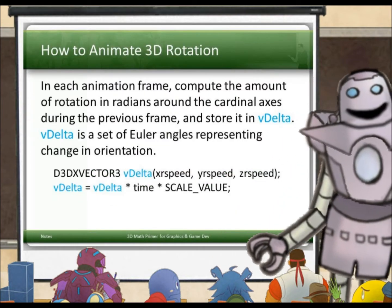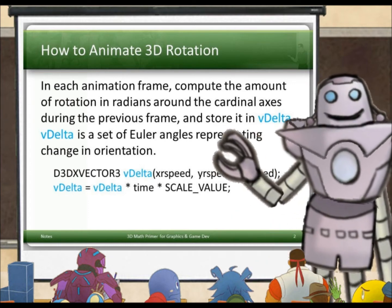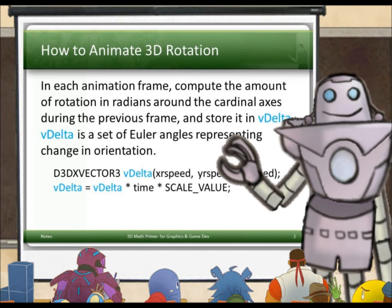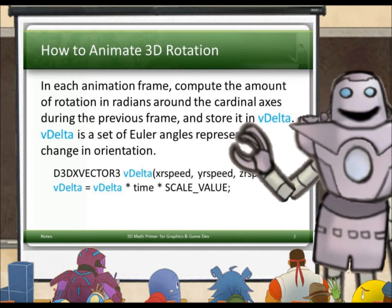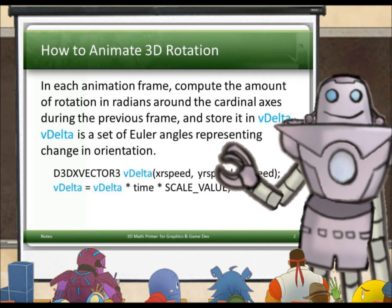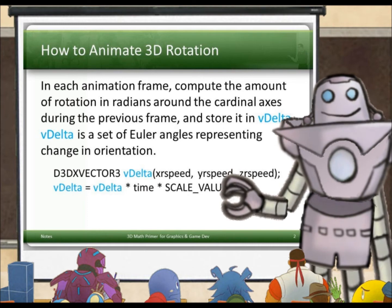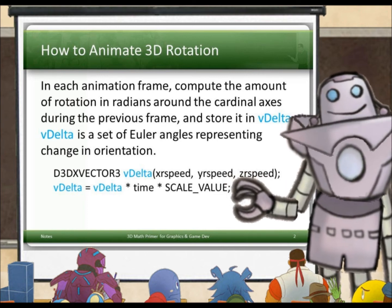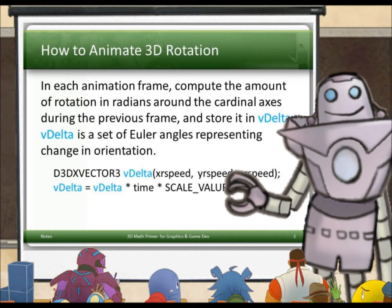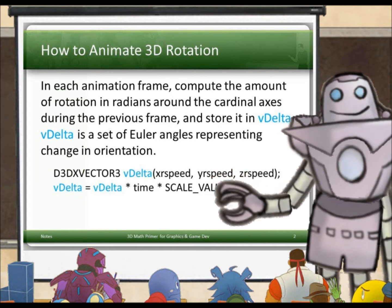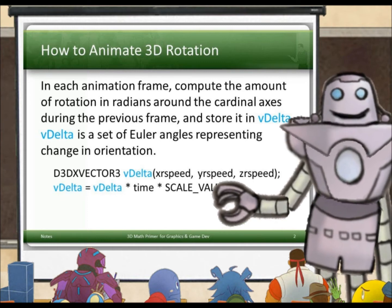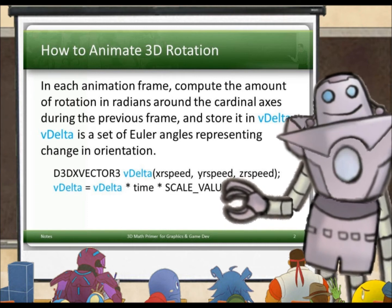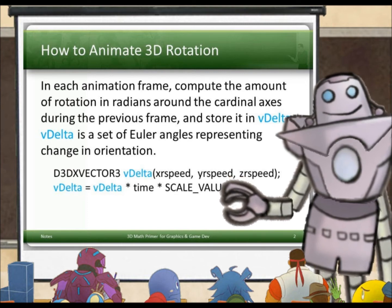Here's how to animate 3D rotation. In each frame of animation, compute the amount of rotation in radians around the cardinal axes — the x, the y, and the z — during the previous frame, and store it in a vector v-delta. So v-delta is a set of Euler angles representing change in orientation. We declare a D3DX vector3 v-delta and initialize it to the x-rotation speed, y-rotation speed, and z-rotation speed — multiplied by a time factor since the last frame and a scale value. So v-delta is a set of small changes in orientation in the current frame.